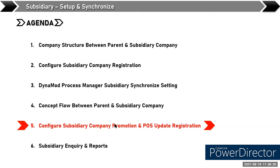So this covers the structure, the configuration for the subsidiary company registration, the process manager for sending subsidiary information from parent to subsidiary company, and the document concept between the parent and subsidiary company. The next section will cover the configuration for subsidiary company promotion and the post update registration. This is actually a new feature — it may not have been covered in previous documentation. This is new for some users.